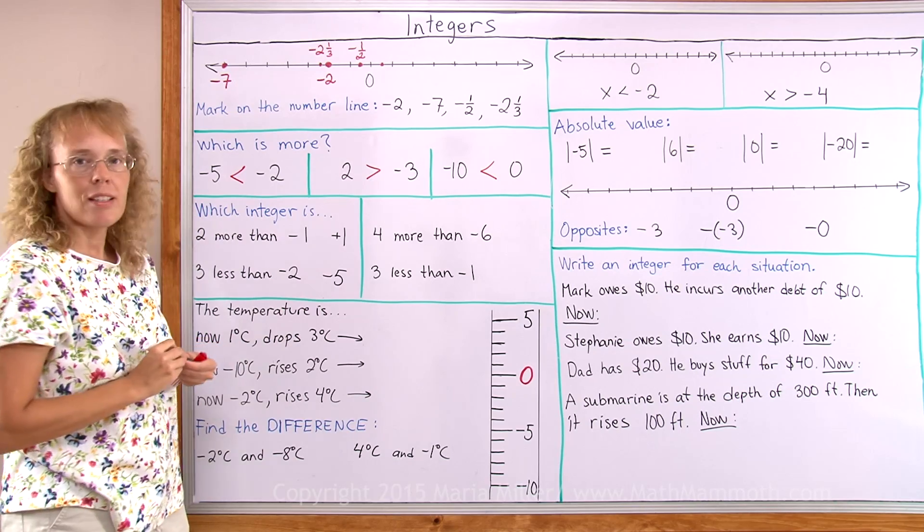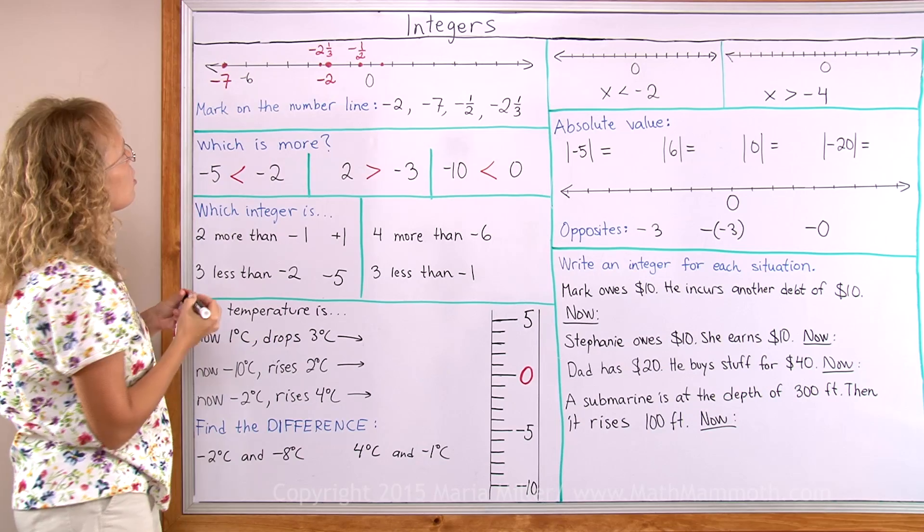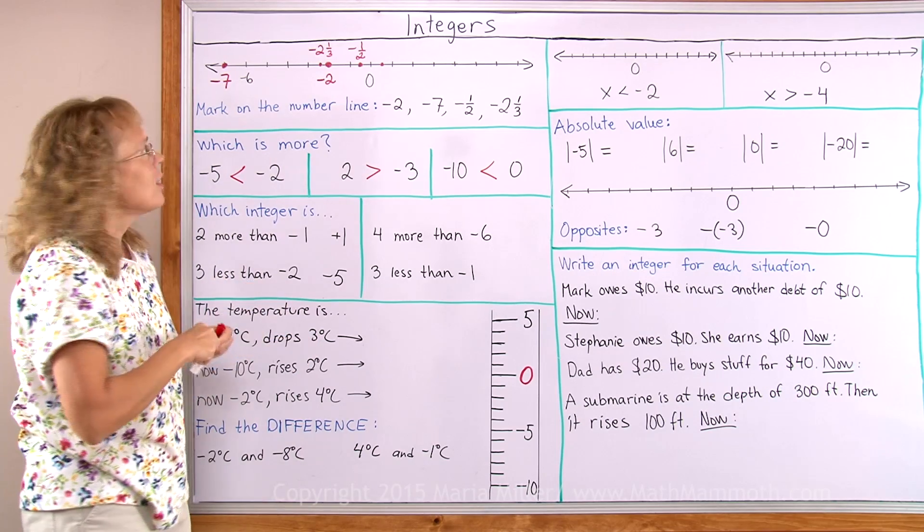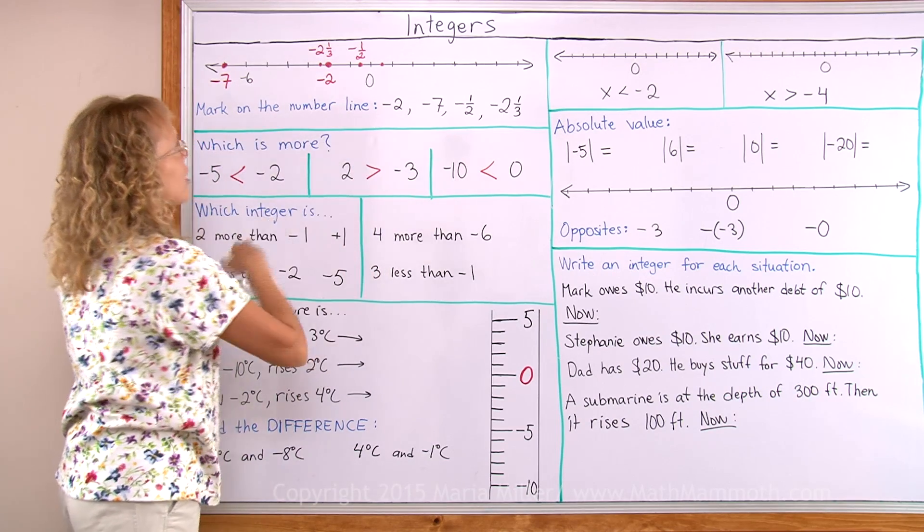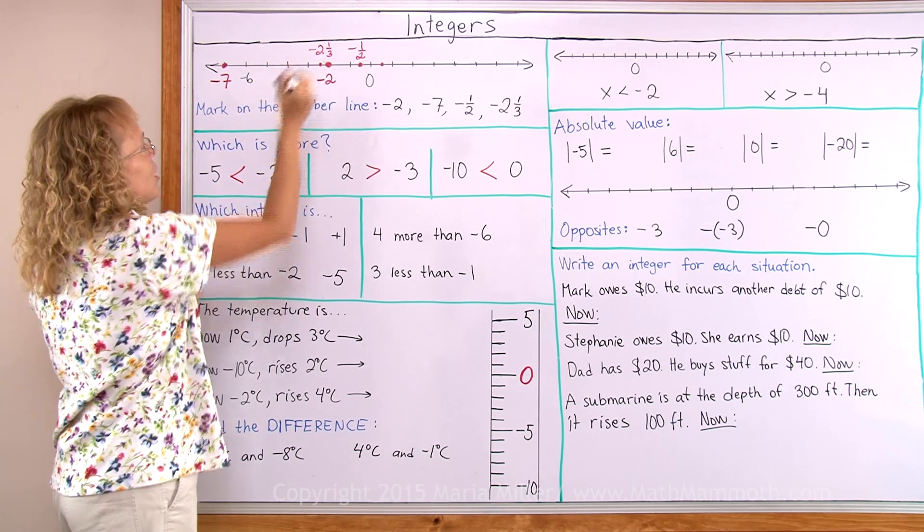4 more than negative 6. Negative 6 is right here. So I go 4 more. 4 more means towards this direction, towards the positives. 1, 2, 3, 4 more. Which is here? Negative 2.